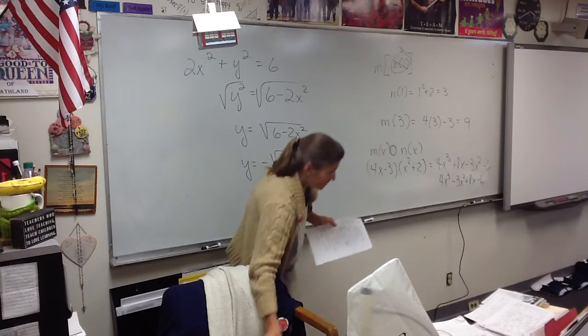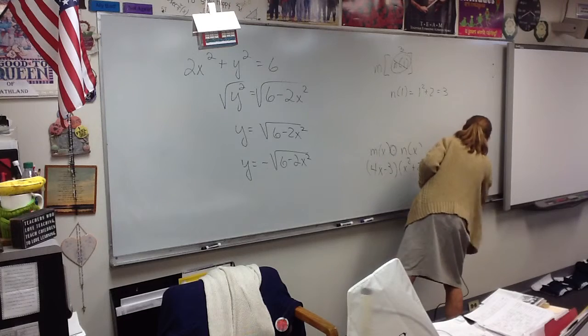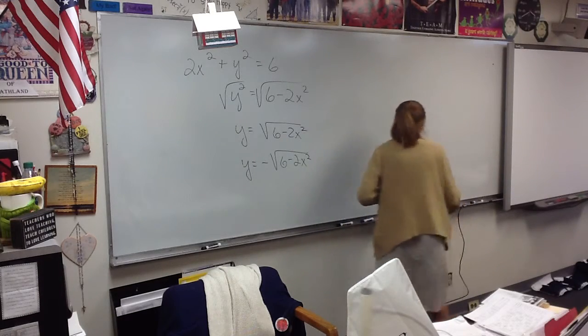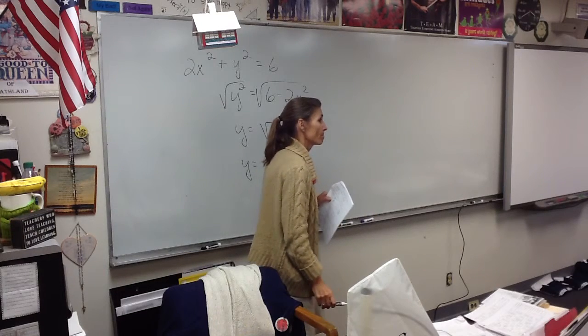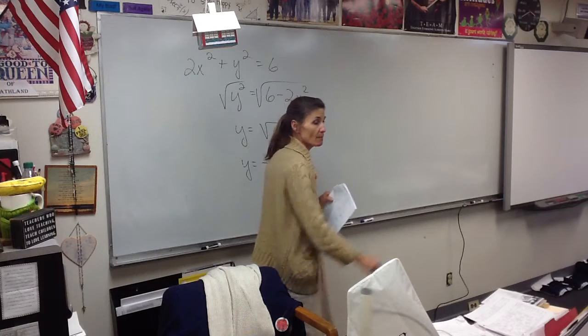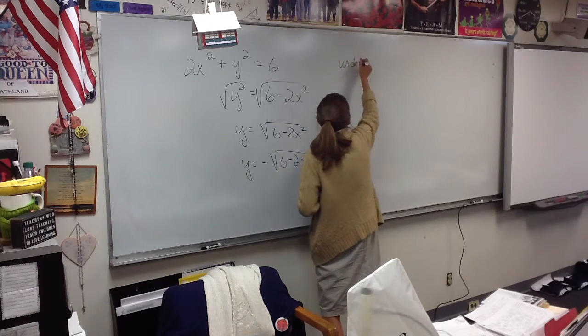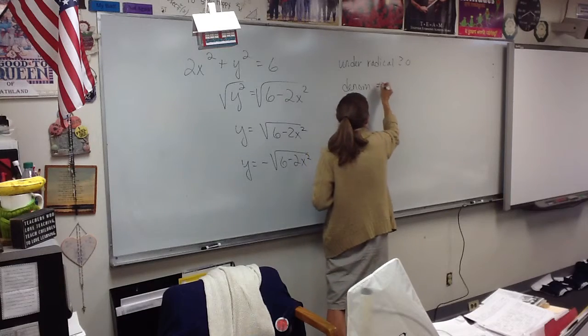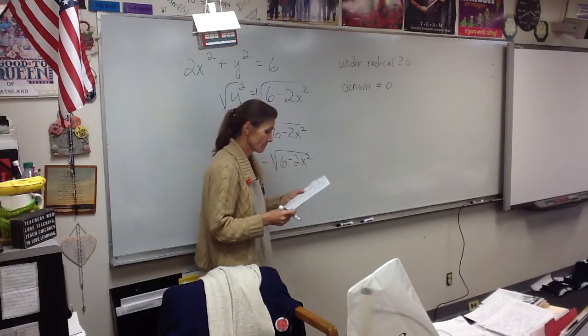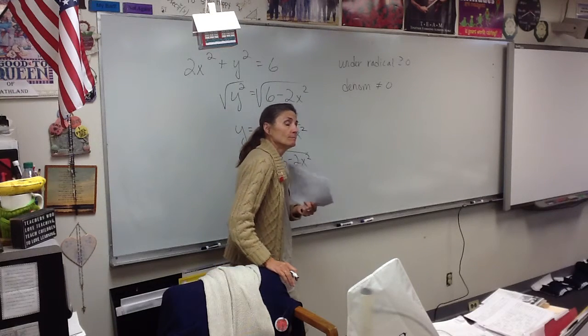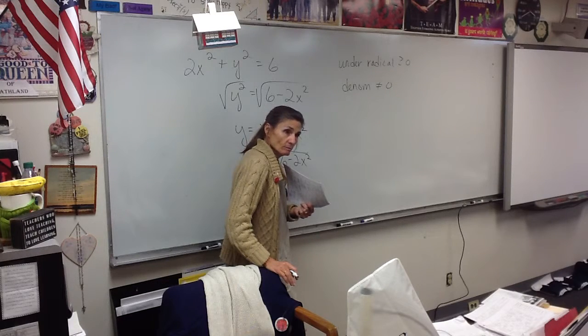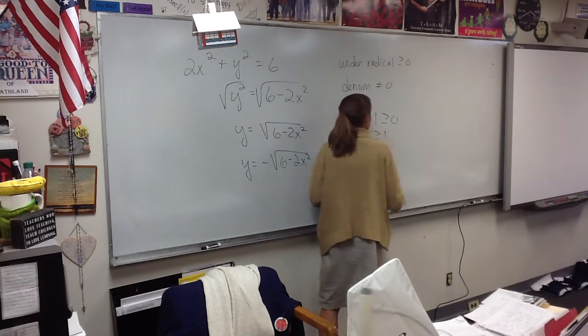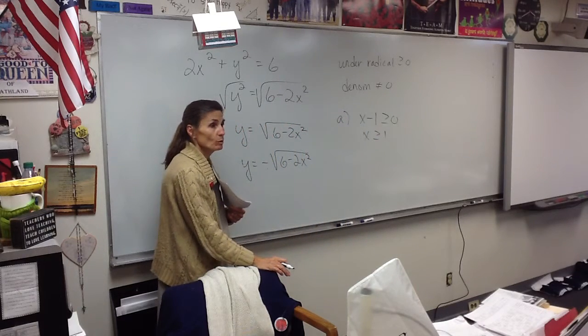Three, domain, our favorite. Who can summarize what the two things are that we have to be careful of when we talk about domain? Julian? I'm going to write them down one more time. Whatever is under the radical has to be greater than or equal to zero. Whatever is in the denominator cannot be zero.